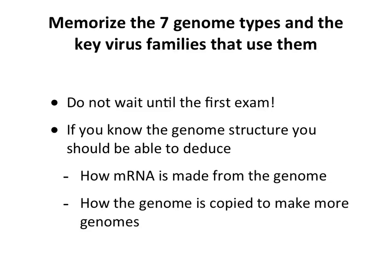Start thinking about these seven genome types — most of you could probably recite them right now. Don't wait until the last minute. The idea is: if I say double-stranded DNA, how do you get to mRNA? For double-stranded DNA it's easy — it's one step to mRNA. You should also know how the genome is copied to make more genomes; we'll get an overview today and explore specific replication mechanisms in later lectures.